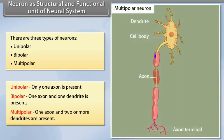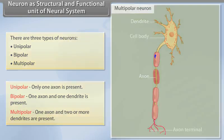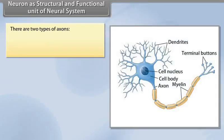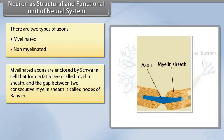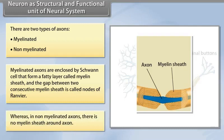There are two types of axons: myelinated and non-myelinated. Myelinated axons are enclosed by Schwann cells that form a fatty layer called myelin sheath, and the gap between two consecutive myelin sheaths is called nodes of Ranvier. Whereas in non-myelinated axons there is no myelin sheath around the axon.